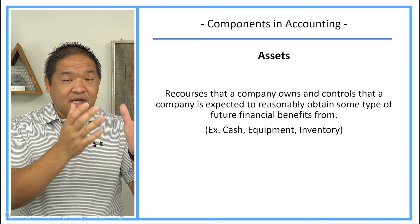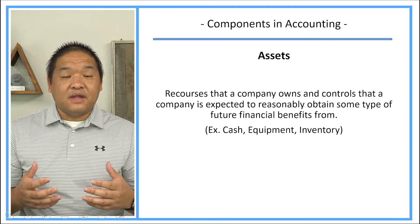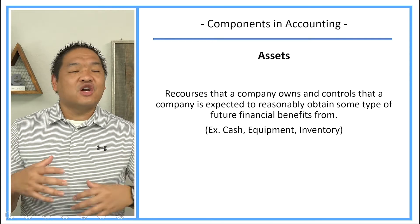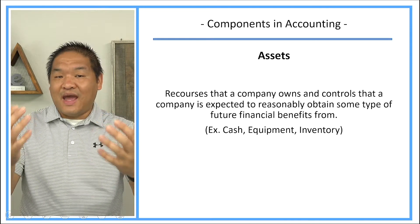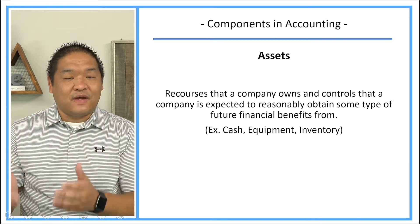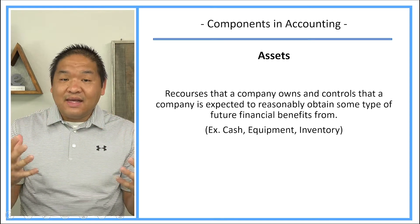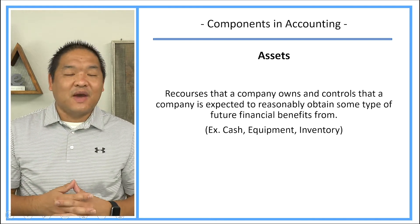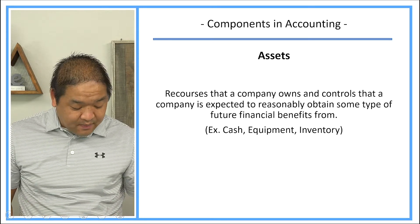Companies will take cash to buy equipment. A company that manufactures things has pieces of equipment that convert a raw material into a finished good. That finished good is then sold to a customer for money — that money is the future financial benefit. Assets are basically anything that a company owns or controls that is expected to provide some reasonable future financial benefit to the company.